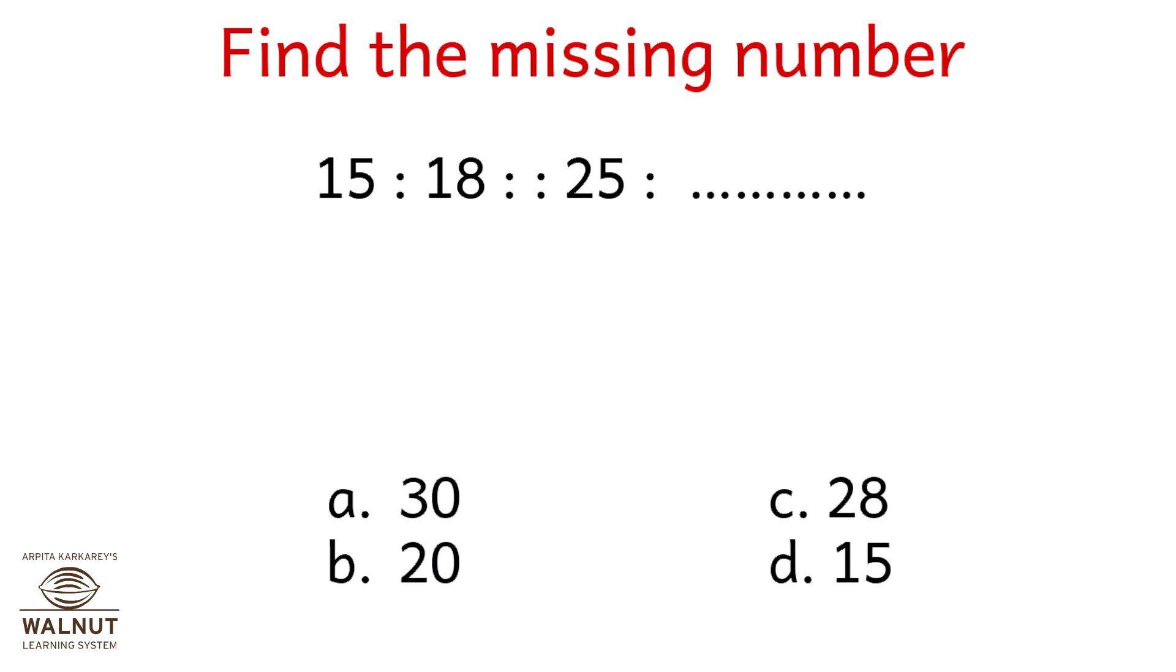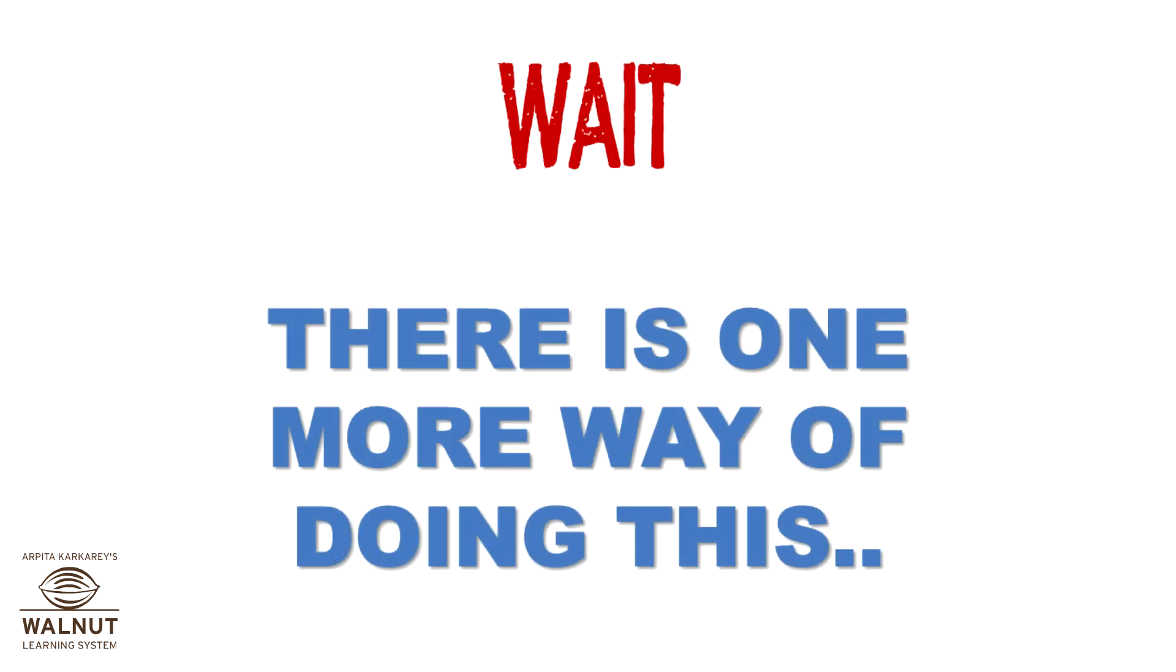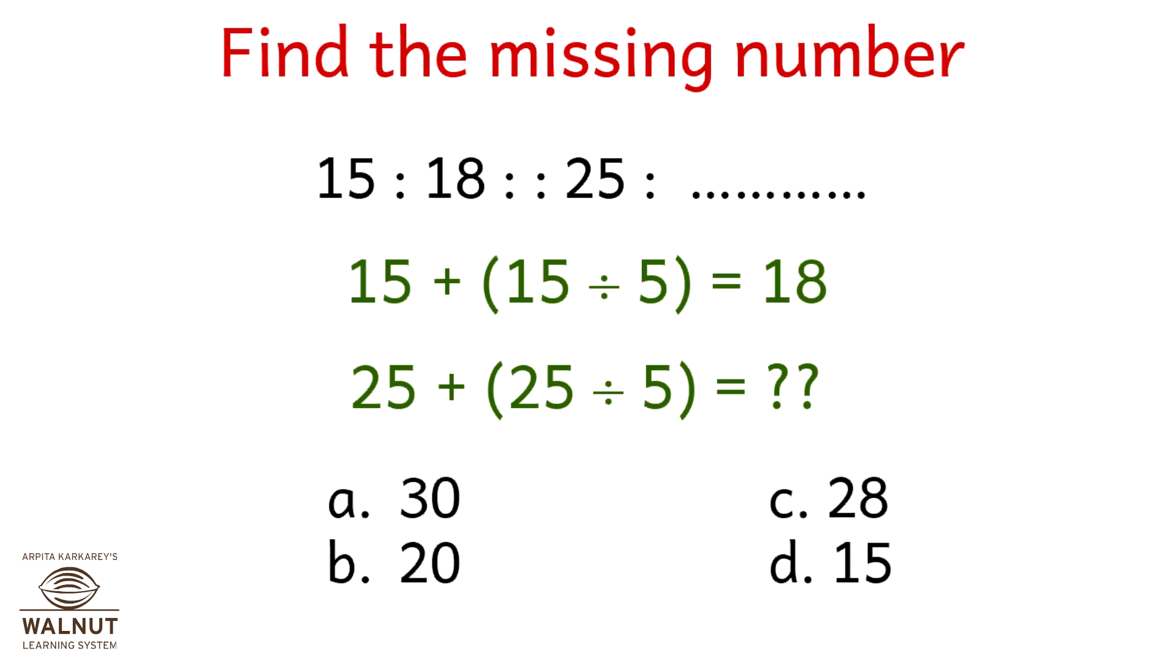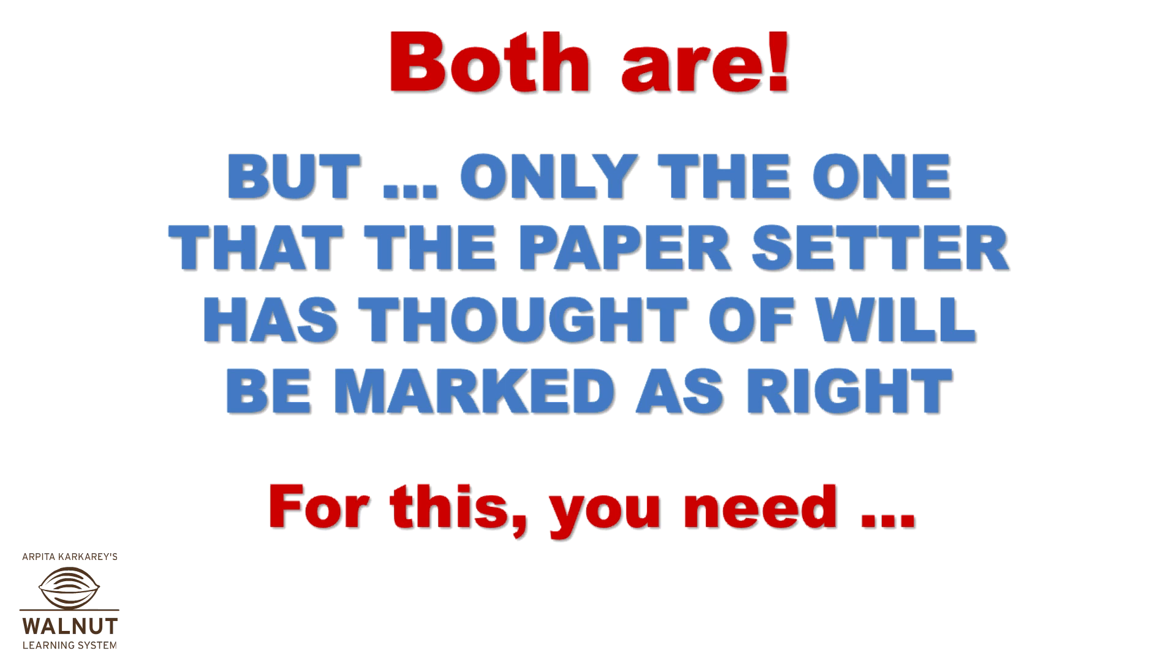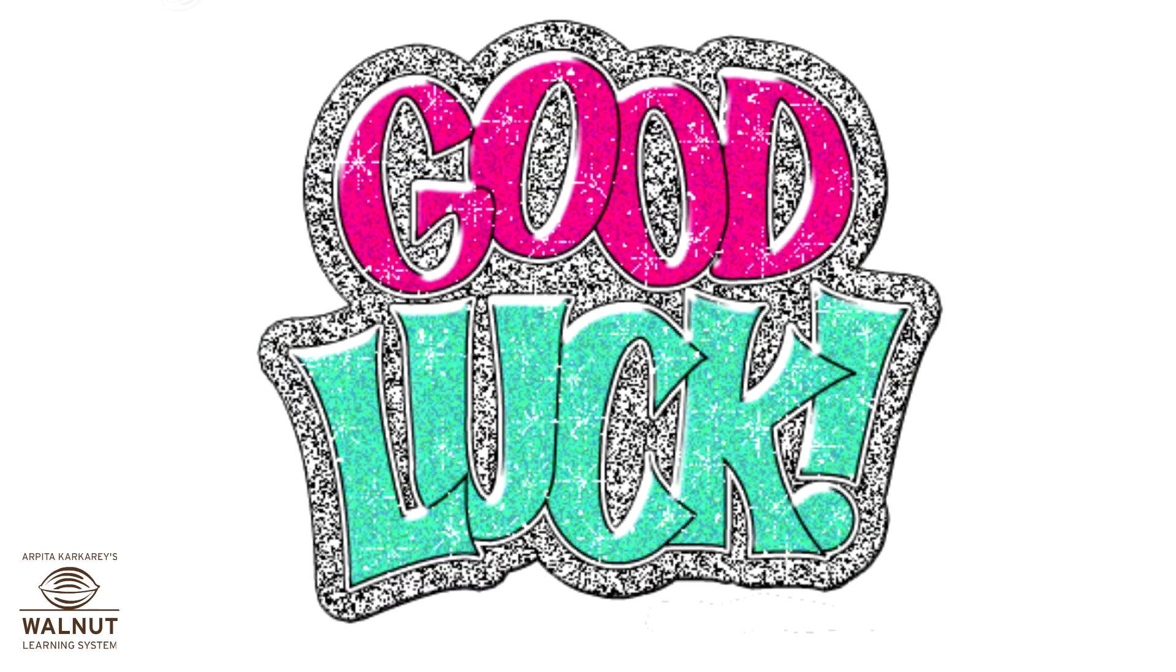Find the missing number here. 15 is to 18 as 25 is to what? 15 plus 3 is 18, and 25 plus 3 is 28. That was easy. Wait, there is one more way of doing this. 15 plus 15 divided by 5 is equal to 18. So 25 plus 25 divided by 5 is 30. So you have two different answers. Which one is the correct one? Both are, but only the one that the paper setter has thought of will be marked as right. For this you need good luck.